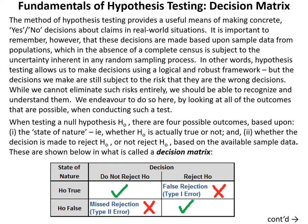When testing a null hypothesis H₀, there are four possible outcomes based upon: first, whether the true state of nature is that H₀ is true or false; and second, whether we decide to reject H₀ or not reject H₀. These are shown in a decision matrix. The two possible states of nature are H₀ is true or H₀ is false, and the two possible decisions are to not reject H₀ or to reject H₀.